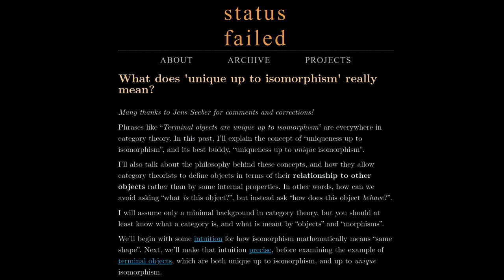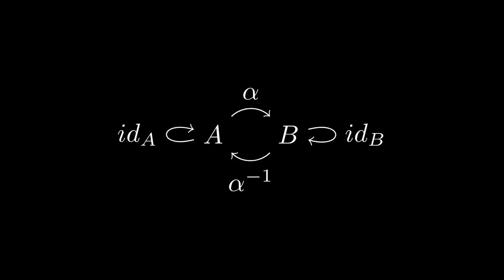It's from this blog called Status Failed. The title is aptly What Does Unique Up to Isomorphism Really Mean? And then it goes on to explain what unique up to unique isomorphism also means. They go through this in a lot of detail. It's a fantastic article, I highly recommend. There are diagrams with analogs in chapter five in Bartosz's book, so it maps one to one for a lot of the concepts.